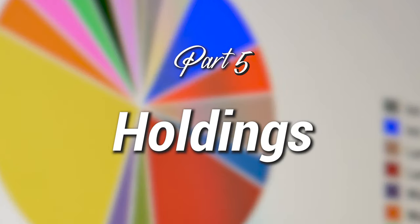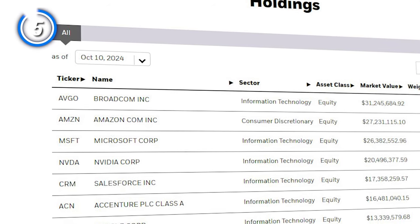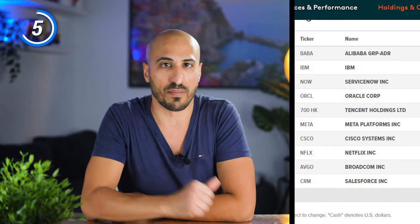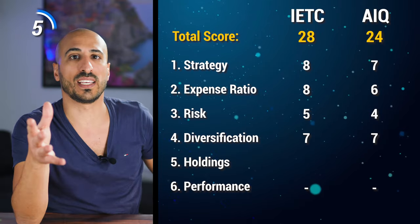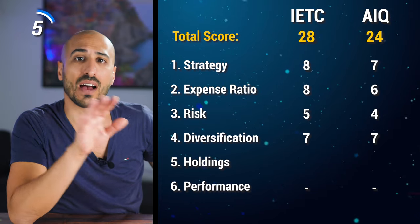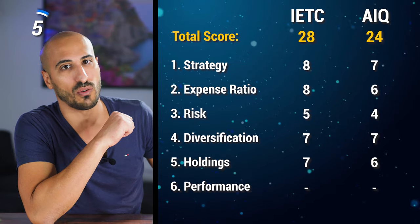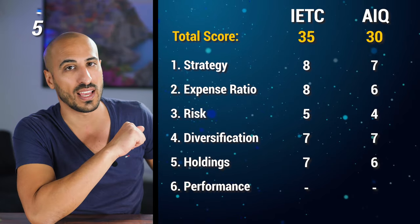Let's discuss holdings. Both ETFs feature some big names in tech, but their allocation strategies differ. IETC leans on top holdings like Broadcom, Amazon, Microsoft and Nvidia, while AIQ's top holdings are more focused on companies pushing the boundaries of AI, such as ServiceNow, Oracle, Tencent and Meta. I find IETC's top holdings to be less volatile names, although I honestly like the presence of Chinese companies in AIQ. In AIQ, I would have liked a bit more weight on Microsoft, Apple and Amazon, considering they are also companies investing heavily in AI. Since AIQ is more concentrated and sector-specific while IETC offers a more balanced tech allocation, I'm giving seven points to IETC and six points to AIQ, bringing totals to 35 for IETC and 30 for AIQ.